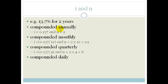Compounded daily. Well, there's 365 days in a year. So, therefore, it's 0.137 divided by 365. And, now N equals 2 times 365, which equals 730.